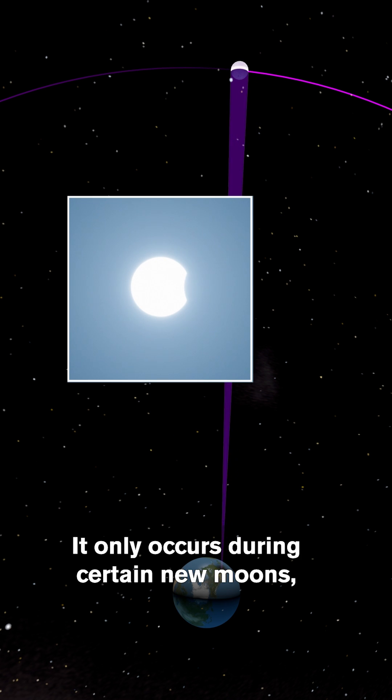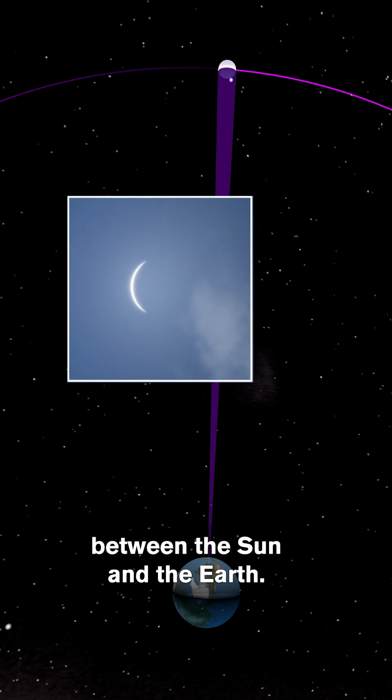It only occurs during certain new moons, when the Moon passes exactly between the Sun and the Earth.